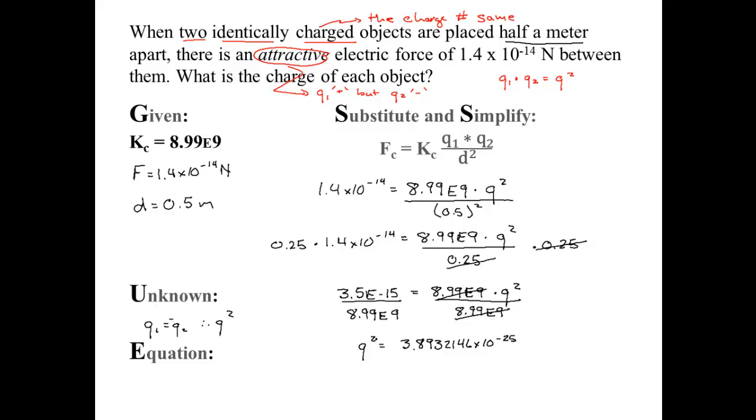I'm not done. This square is kind of a problem, but you can take the square root to the left and the square root to the right and find that Q1 equals 6.239563032 times 10 to the negative 13.